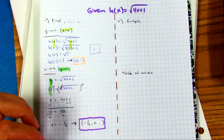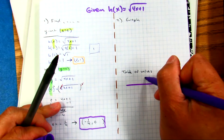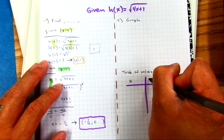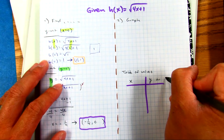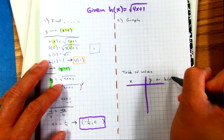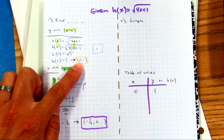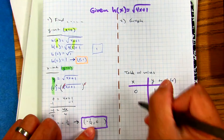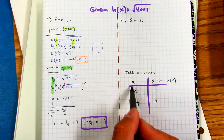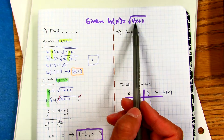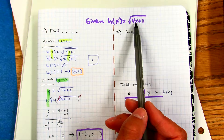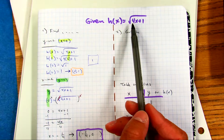Let's create a table of values. This is your x. This side is called the y, or h of x. So we have zero comma one, and negative one fourth comma zero. If I start plugging in numbers for x — 1, 2, 3, 4 — someone pick a number. 10. Four times ten is 40, plus one is 41. Is the square root of 41 a perfect square? No.